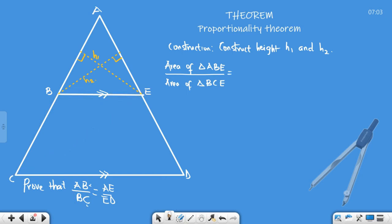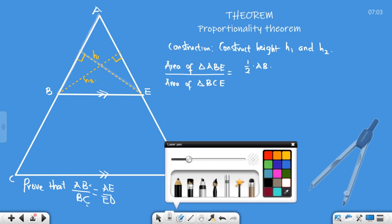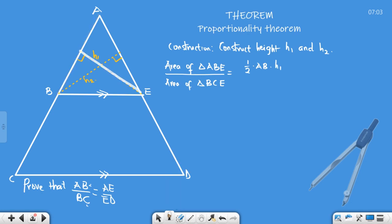That's very simple. Those are your bases: half, what's your base? AB, and what is the height? We're working with height h1. Same thing here because we have the same base: half, BC and h1. Your half and half will cancel, h1 and h1, so we're left with AB over BC.